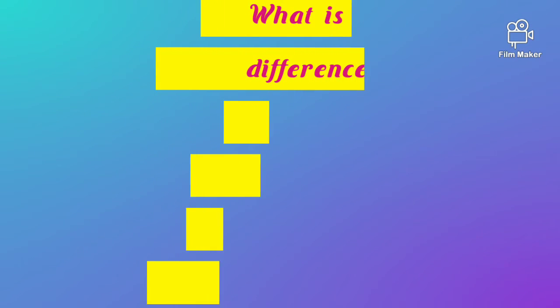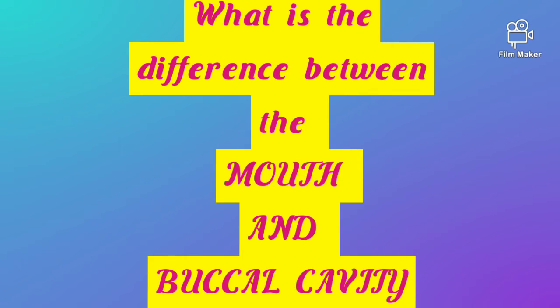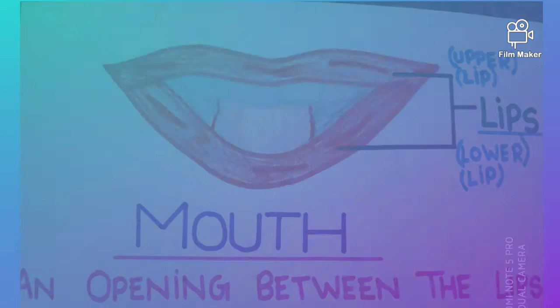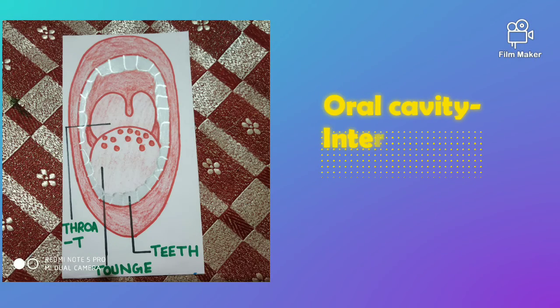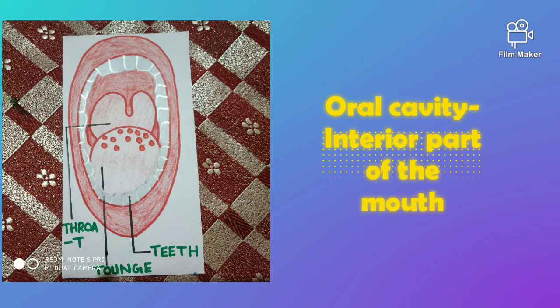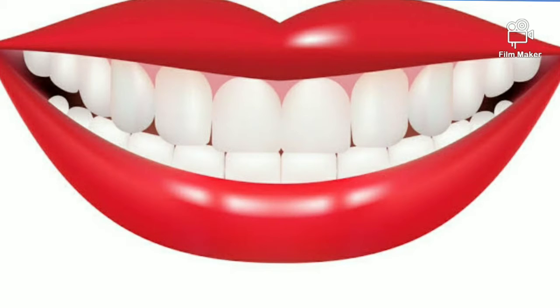But what is the difference between mouth and buccal cavity? The mouth is an opening between the lips. It leads to the buccal or oral cavity. In simple words, the mouth is the organ through which food is ingested, and the interior part of the mouth is the buccal or oral cavity where the teeth are attached.